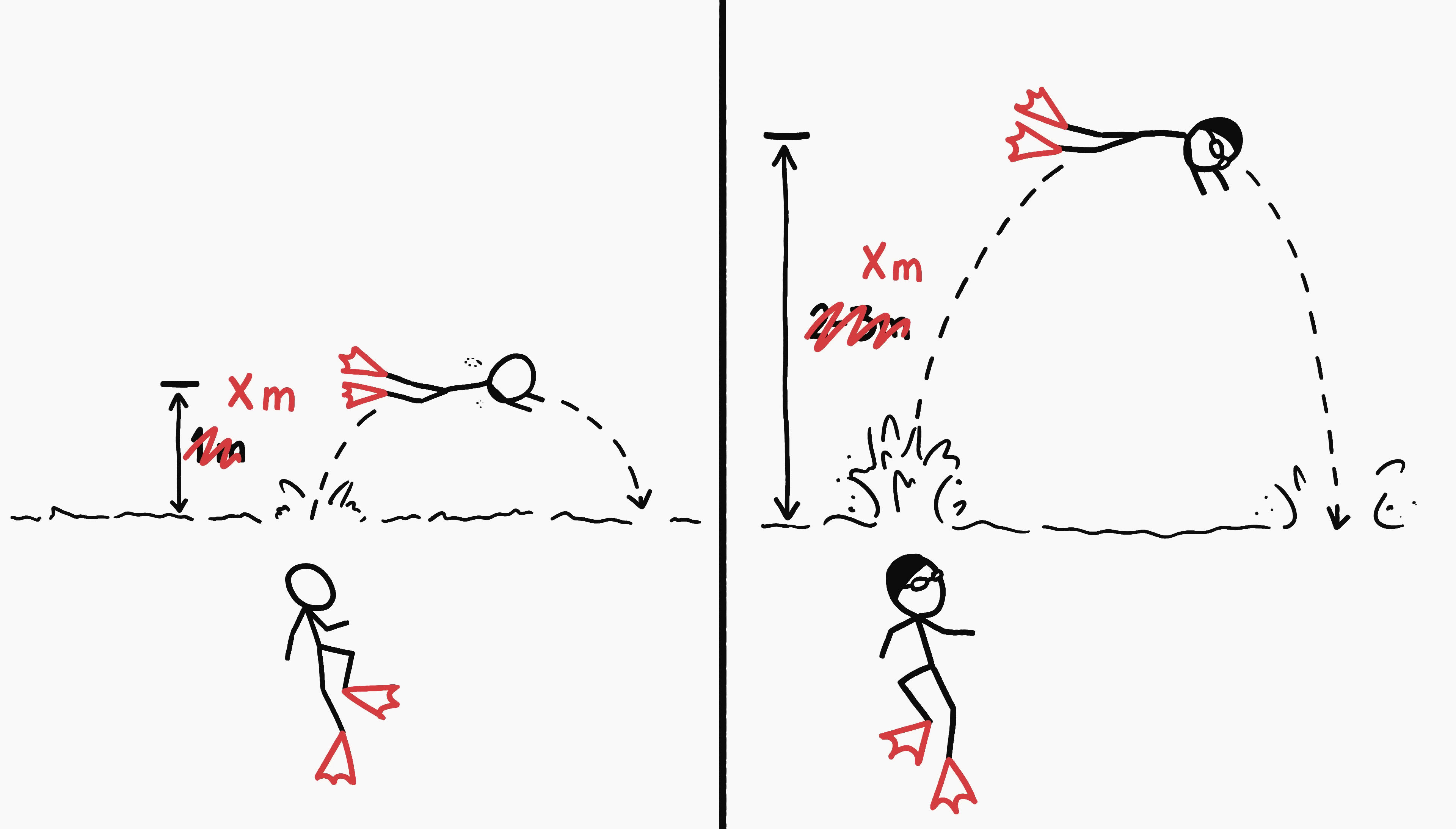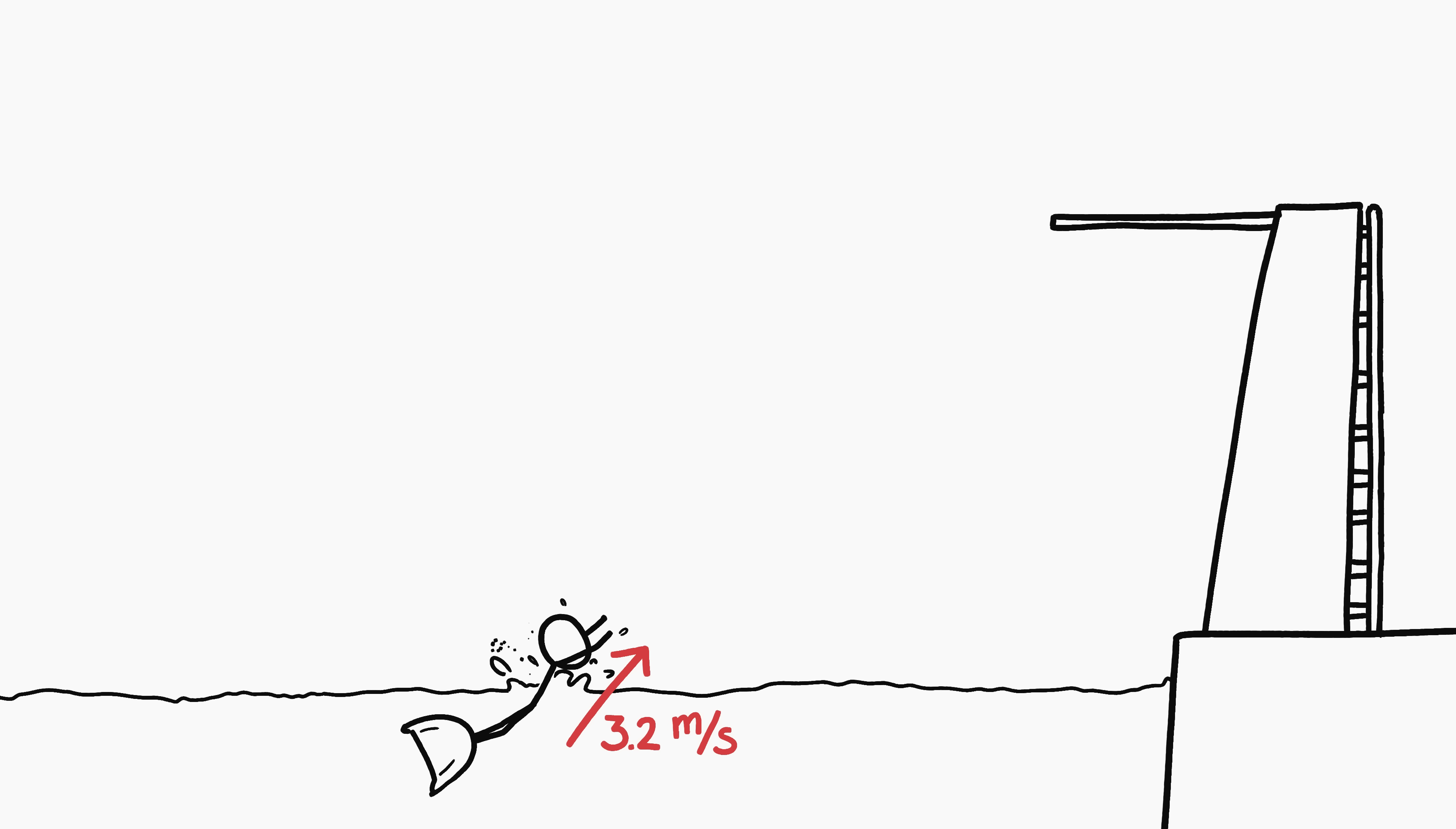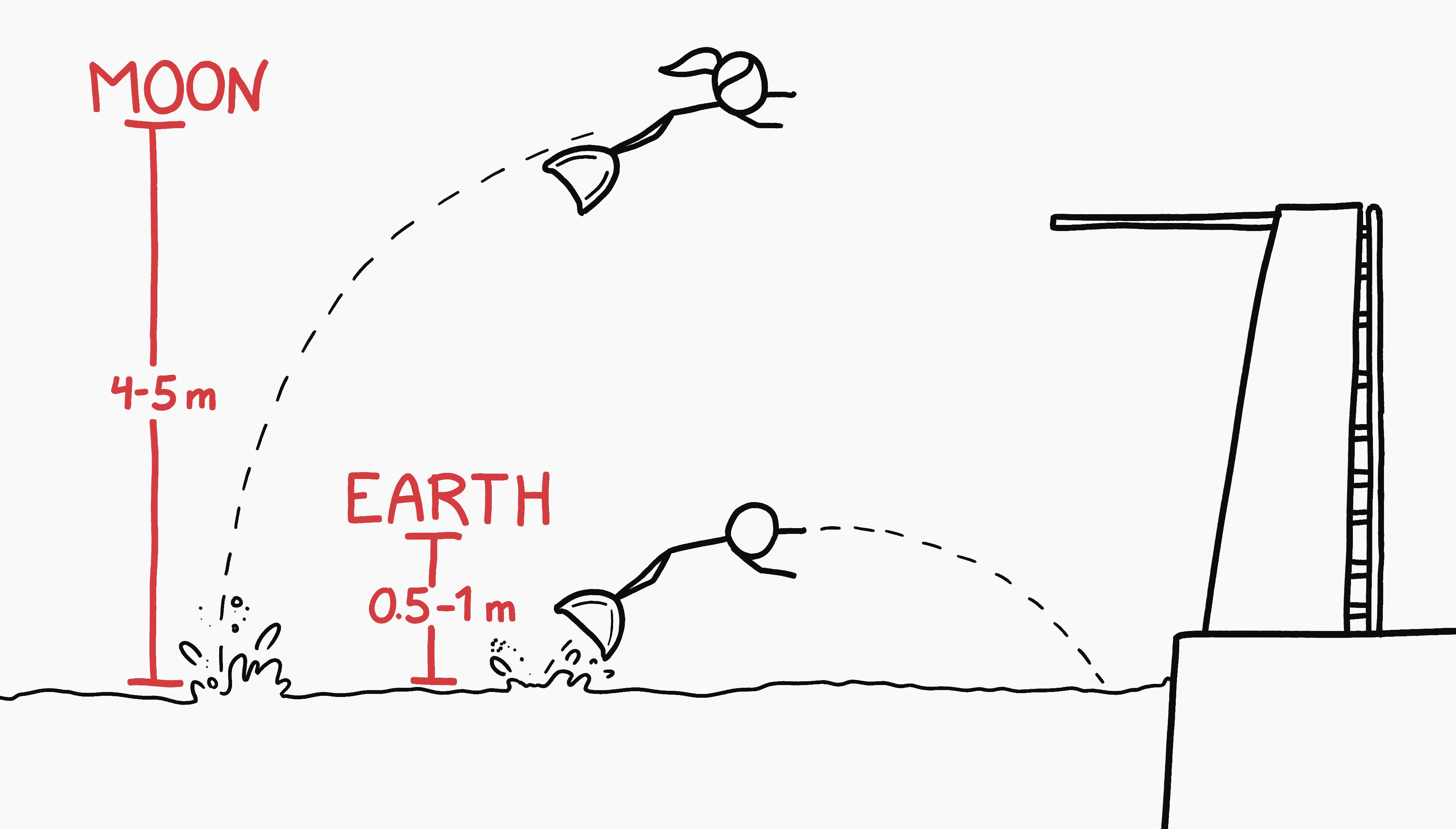The numbers get even more exciting when we introduce fins. Swimmers wearing monofins can exceed 3 meters per second, which is fast enough for some pretty impressive jumps even on Earth. Data on finswim top speeds and thrusts suggest that on the moon, a champion finswimmer could probably launch themselves as high as 4 or 5 meters into the air.